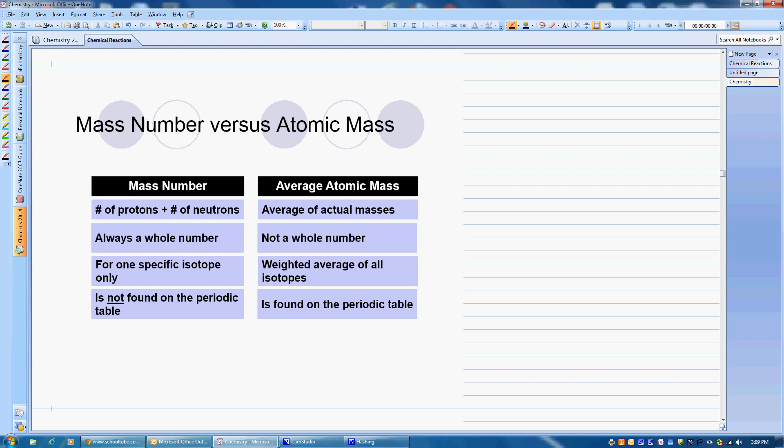The average atomic mass, which is what we do see on the periodic table, is what we look up when we look up a mass. It's going to be the weighted average of all isotopes. And I'm going to show you how to figure that out in just a second. And it's typically a decimal. It's not a whole number. It's the average of all the different masses of all the different isotopes.